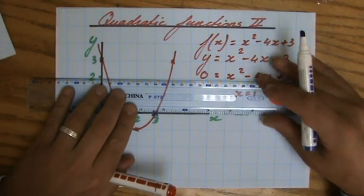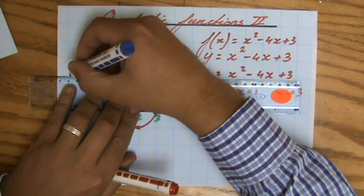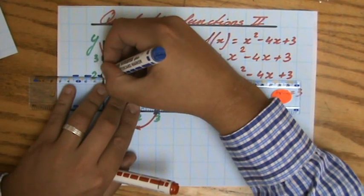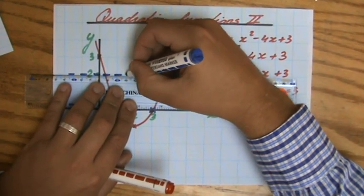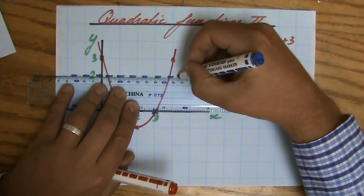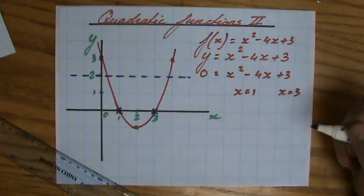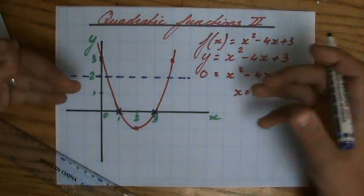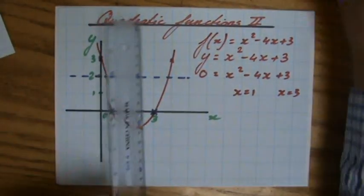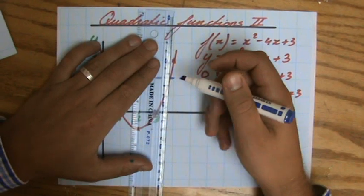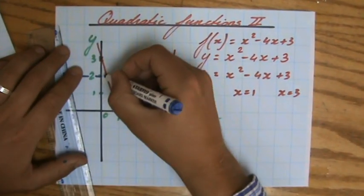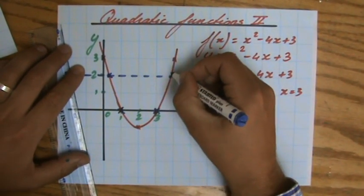If you have seen my videos about linear functions, or perhaps coordinate geometry, those videos, then you will know that y equals 2 is the horizontal line where y is 2. So where is my graph 2? Where for my graph is y 2? Well, that is, sorry, that is here, and that is there.